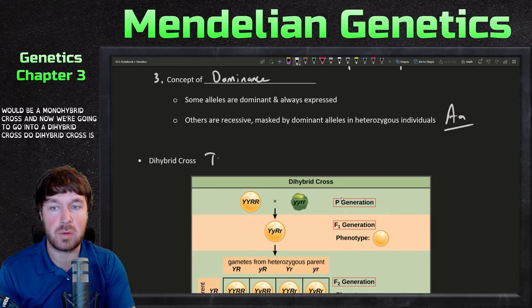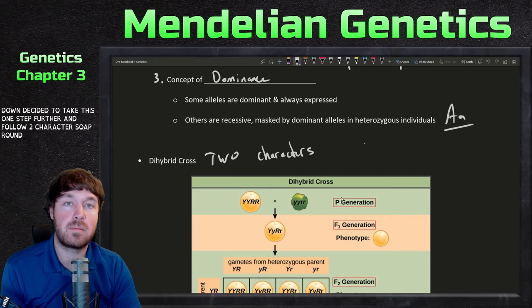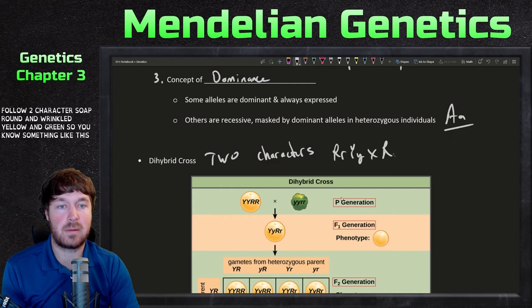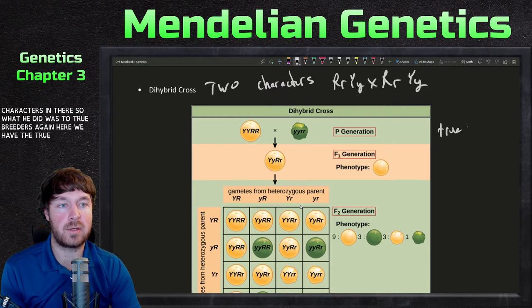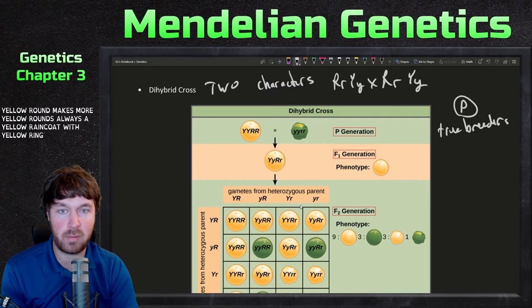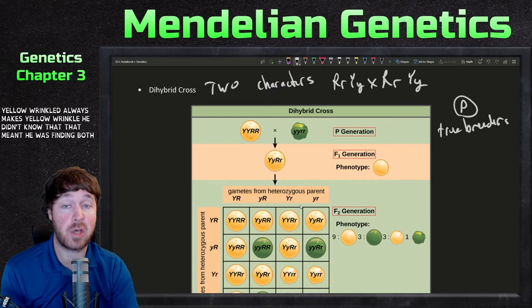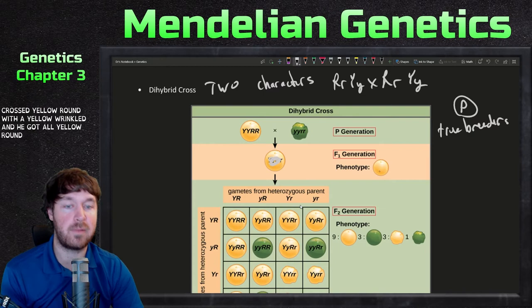Now we're going to go into a dihybrid cross — a dihybrid cross involves two characters. Mendel decided to take this one step further and follow two characters: round and wrinkled, yellow and green. The true breeders return for the parent generation — a yellow round crossed with yellow round always makes yellow round, and yellow wrinkled crossed with yellow wrinkled always makes yellow wrinkled. He didn't know that meant he was finding both as homozygous dominant, but that's what we know today.